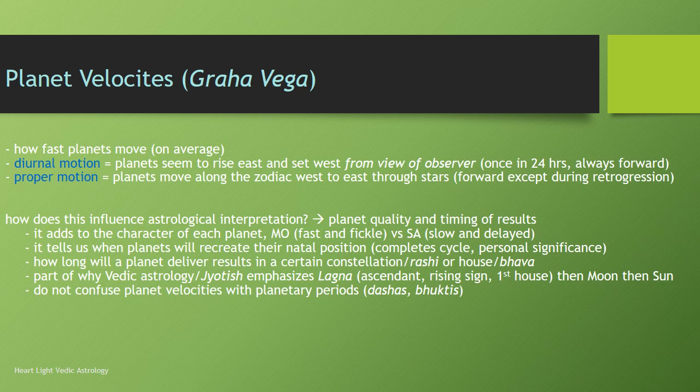The moon symbolizes the mind, and its general interpretation is that it's fast but also fickle, as opposed to Saturn, which is the slowest planet. Whenever we see Saturn, we always think of slowness and delays. Part of this is based on how fast these planets actually move. Vedic astrology was developed over 5,000 years ago, before any technology or telescopes, so all of this astrology was based on what the eye could see on its own.